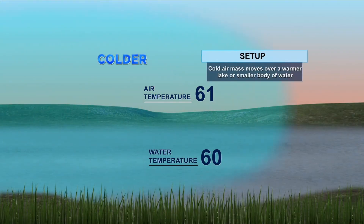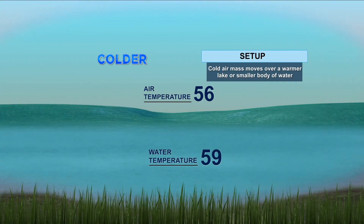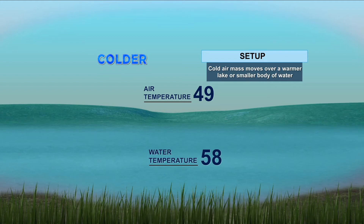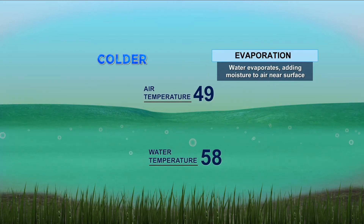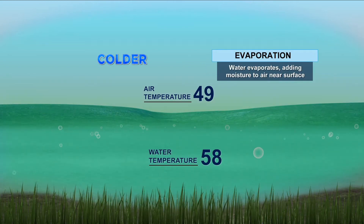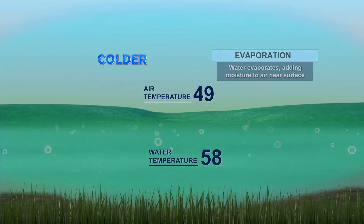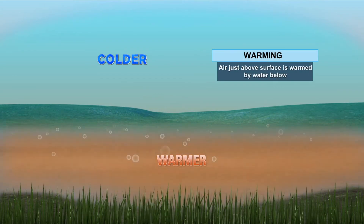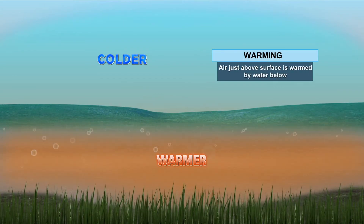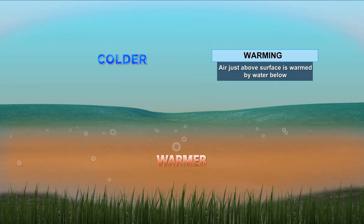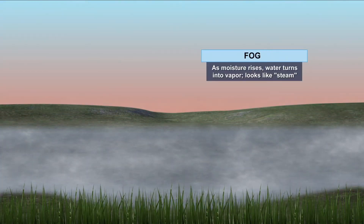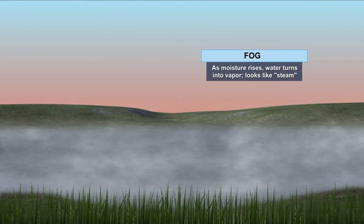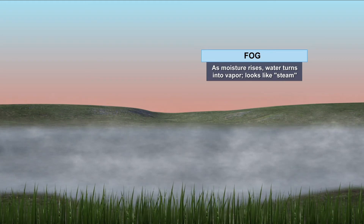First things first, let's focus on the temperature of the air and the water. Notice the difference? The colder air moves across the surface. The second ingredient we need is moisture. This happens when water evaporates into the air and allows for saturation near the surface. As the water evaporates, it warms the layer of air closest to the ground, allowing for a sharp contrast in temperature. As the moisture rises, the water turns into vapor. It looks like steam, and that's your fog.